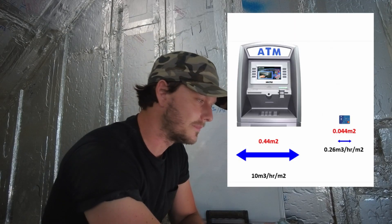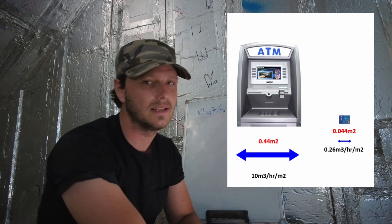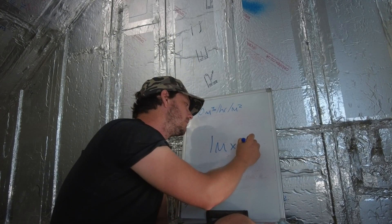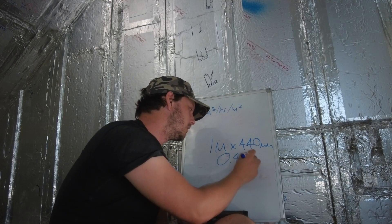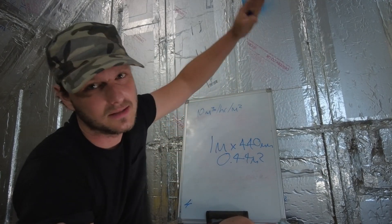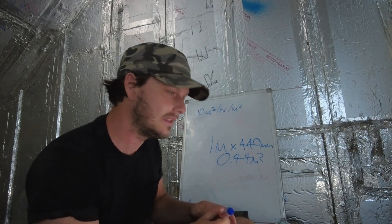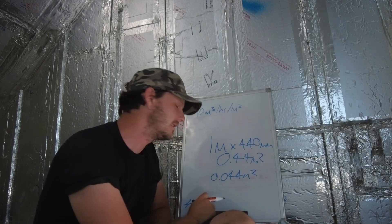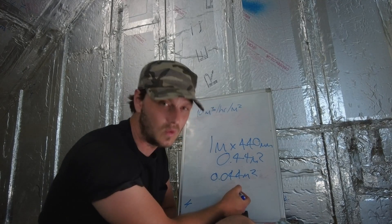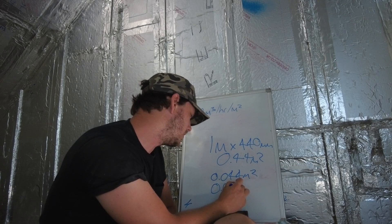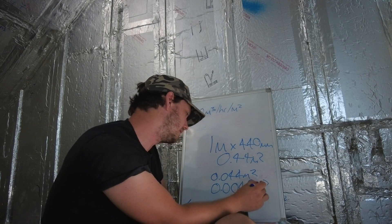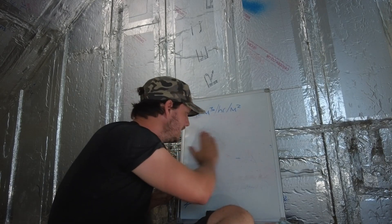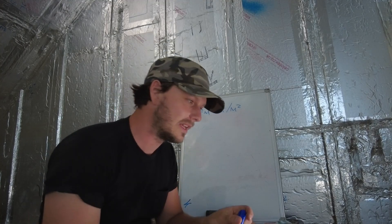Going back to his little picture: he says the ATM equivalent area is 0.44 meters squared, which makes sense - roughly one meter tall by 440mm wide. But then he says a credit card is 0.044 meters squared, which it absolutely is not. A credit card is probably more like 0.0044 meters squared. He's a certified passive house person who doesn't even know what he's talking about.